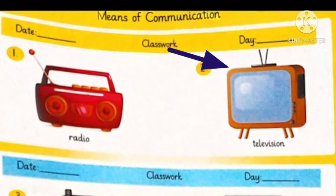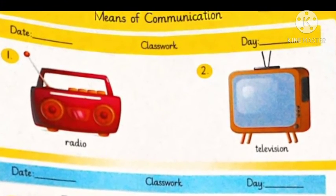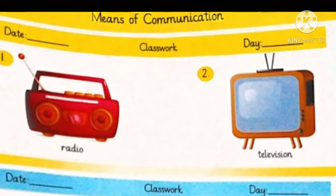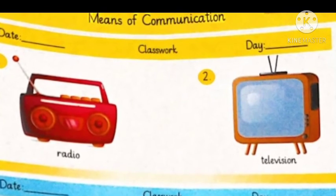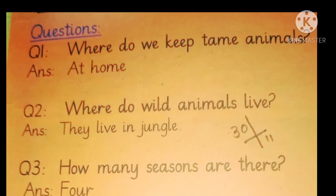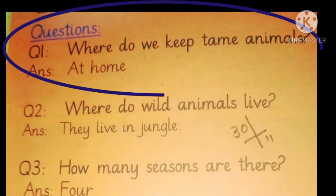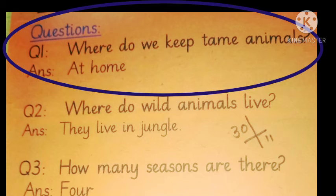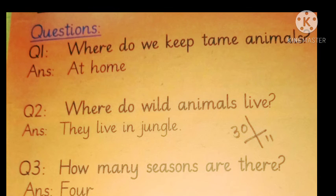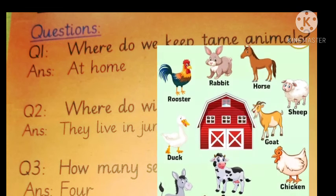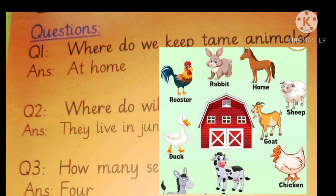After revision, we will revise question number one of comprehension B. Question number one is: where do we keep tame animals? What are tame animals? Tame animals are animals which are not harmful for us. Since they are not harmful, we can keep them at our homes.